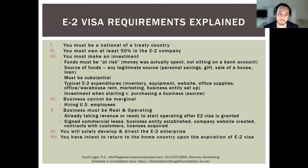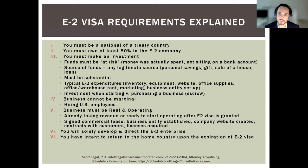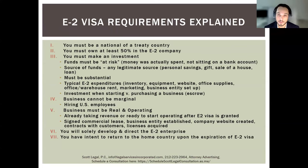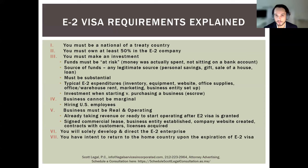The second requirement is that the applicant for the E2 must own at least 50% of the E2 company. The E2 company would be the business that you are starting or purchasing in the US. The applicant, in order to be successful, must own at least 50% of that business. You need to provide evidence of the ownership — that's a big part of the application.